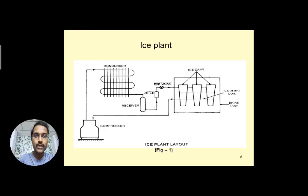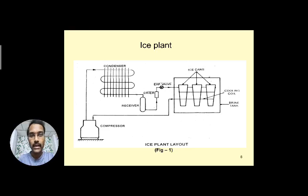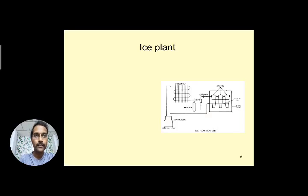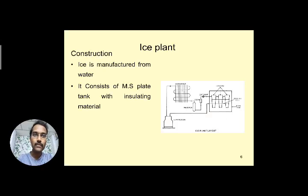The main purpose of the ice plant is to produce ice cubes, which requires a special arrangement in the evaporator. The evaporator contains ice cans, cooling coils, and a brine tank. At the bottom of the brine tank, brine solution is filled. We will see the importance of the brine solution shortly.